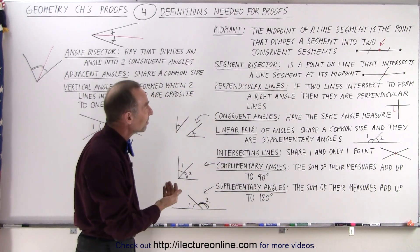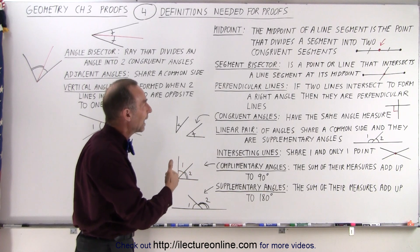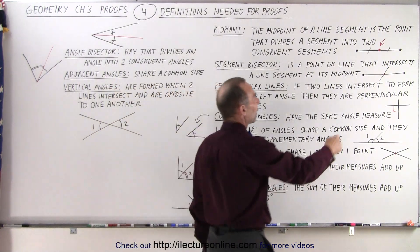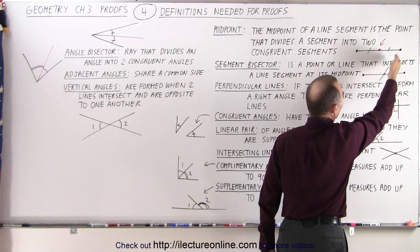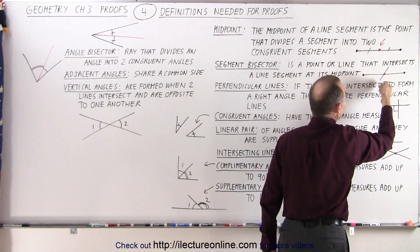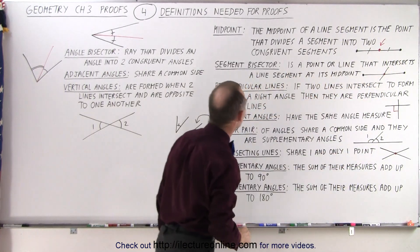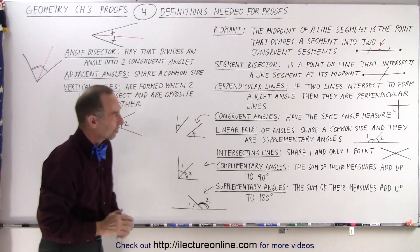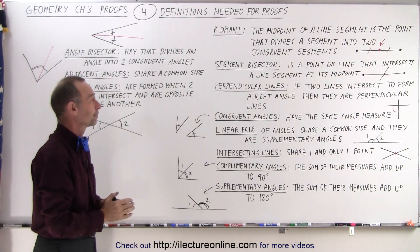A segment bisector is a point or a line that intersects a line segment at its midpoint. Here we have a line segment, there's the midpoint, and there we have a line going through the midpoint — that line then becomes what we call the segment bisector. It doesn't have to be perpendicular.